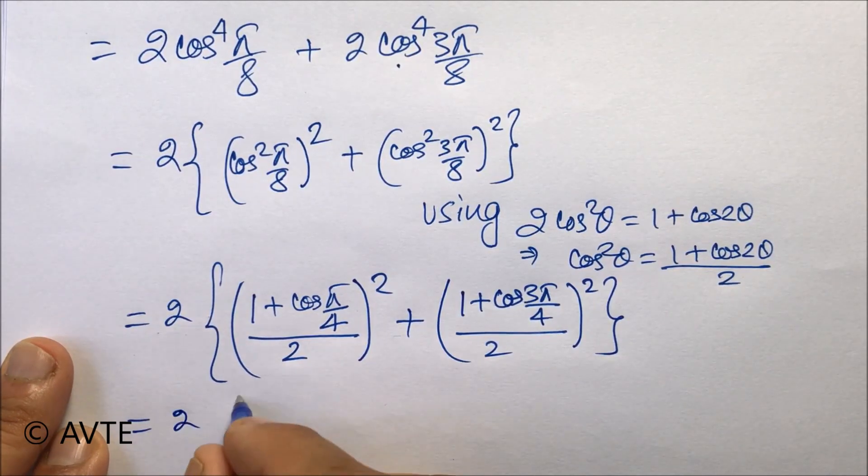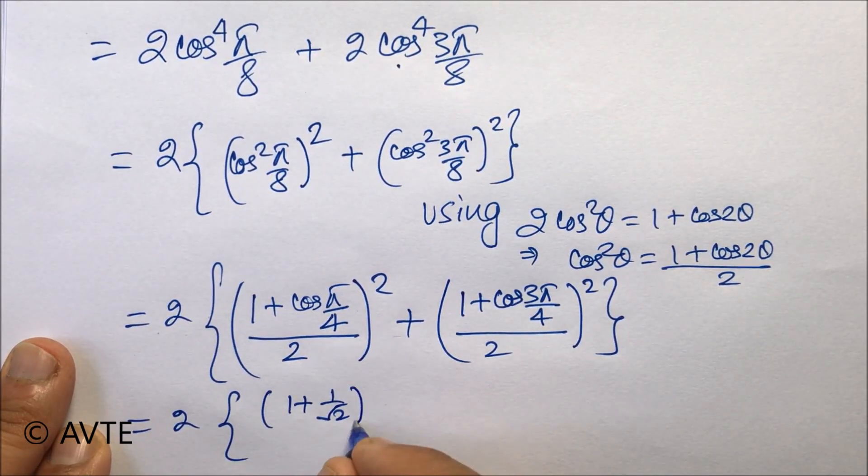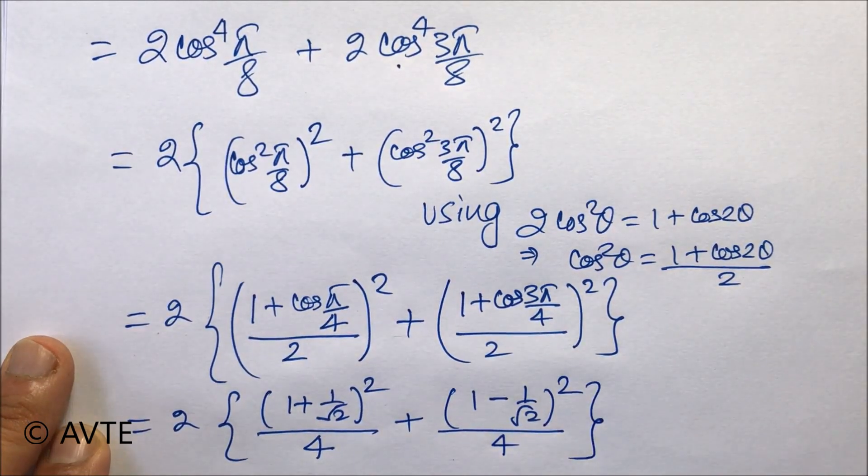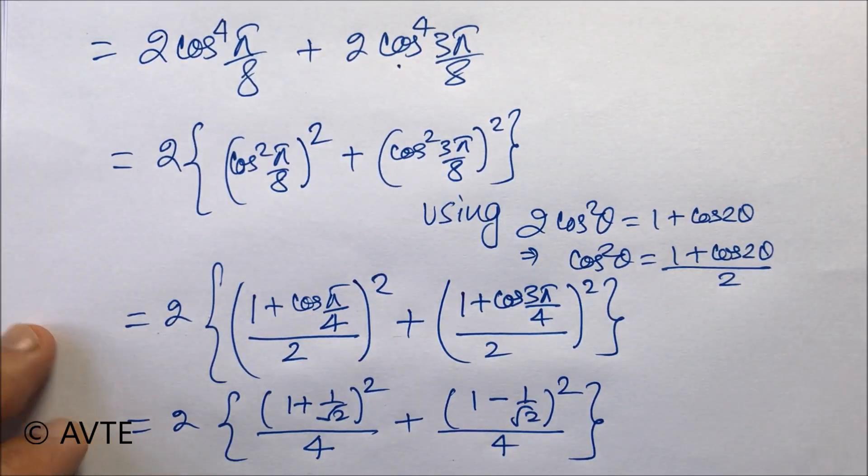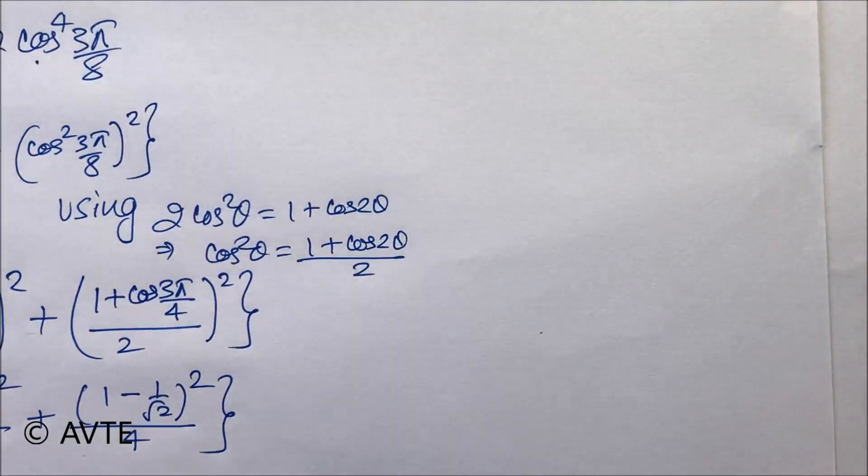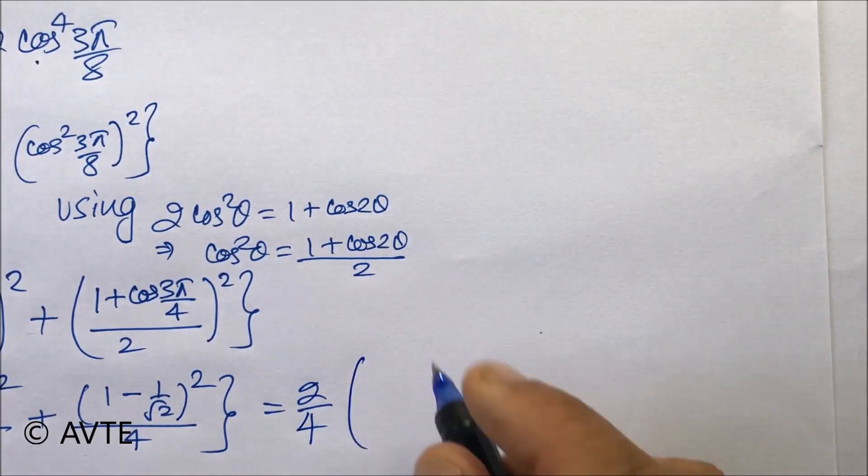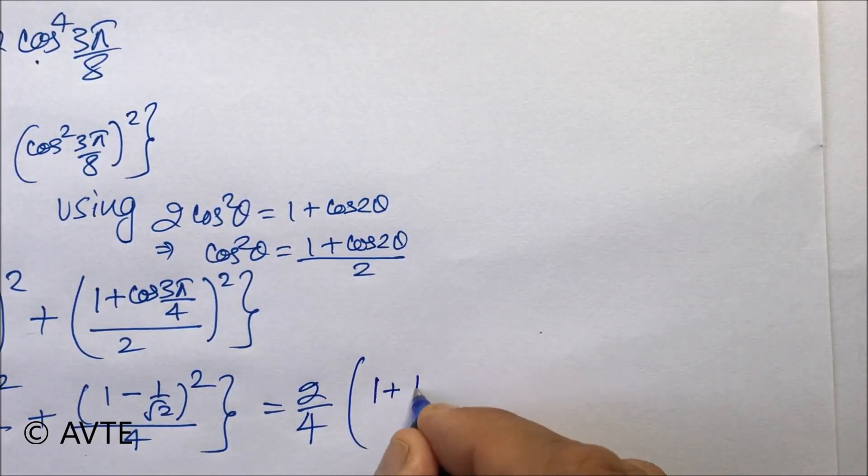So cos(45°) is 1/√2 divided by 4. Remember, this is (1/2)², so it will be 4, and cos(135°) is -1/√2 squared by 4. We can take 1/4 common; 2 is already outside, and then we can either use the identity or actually open the whole square.